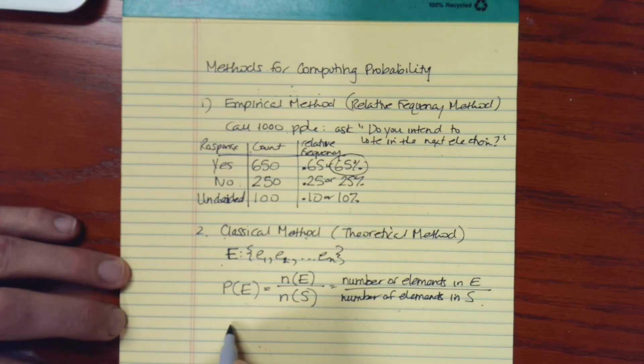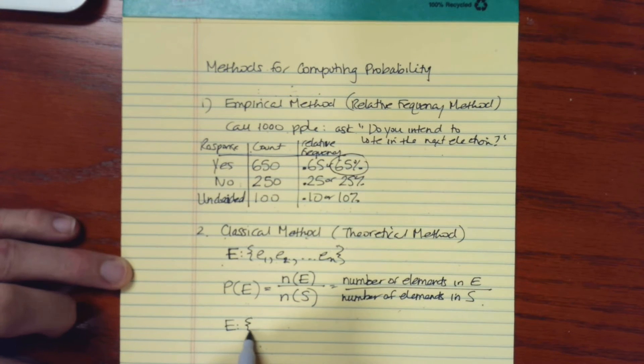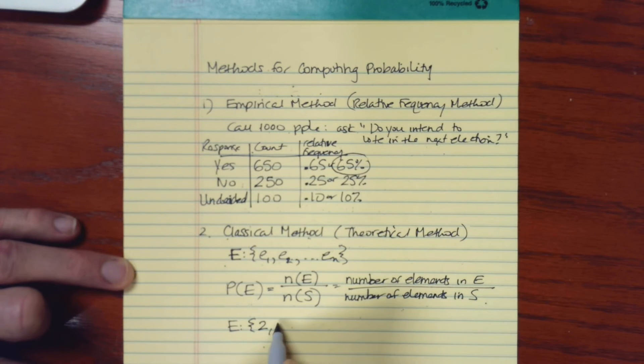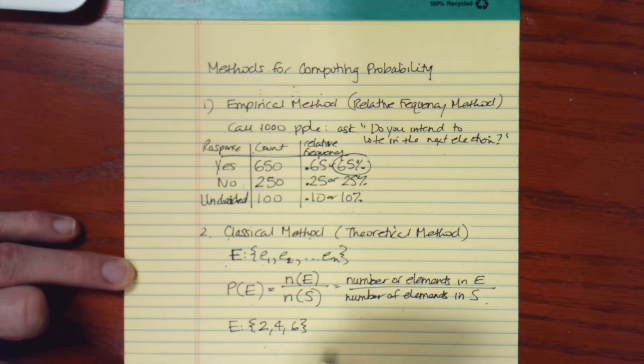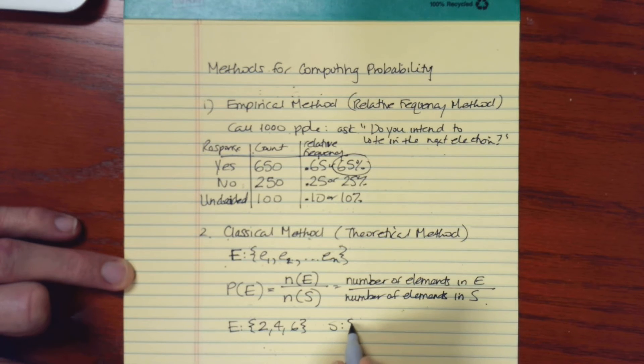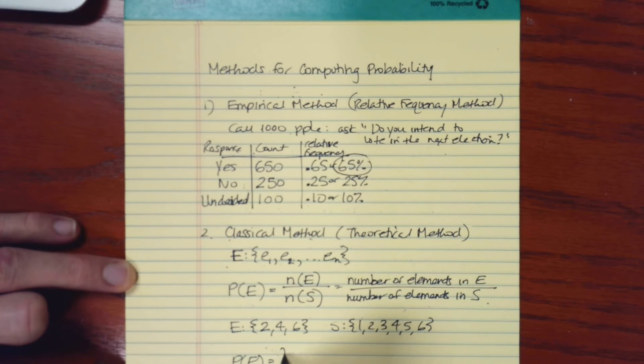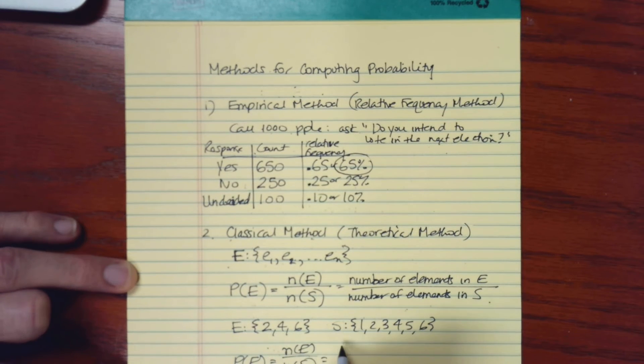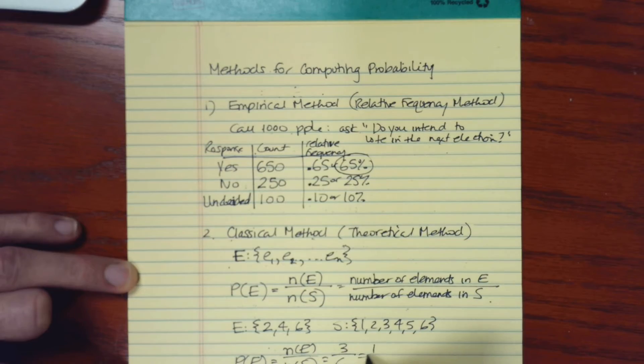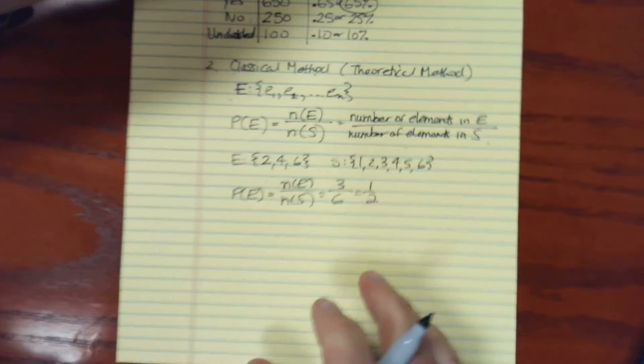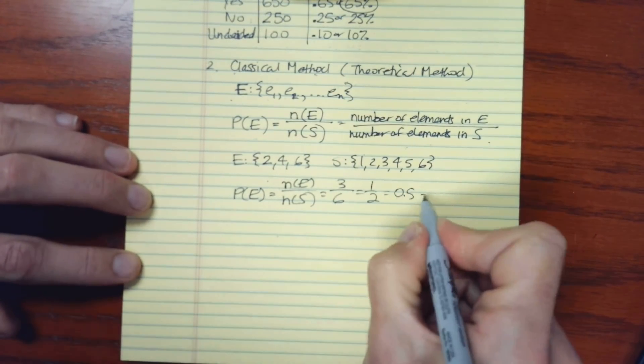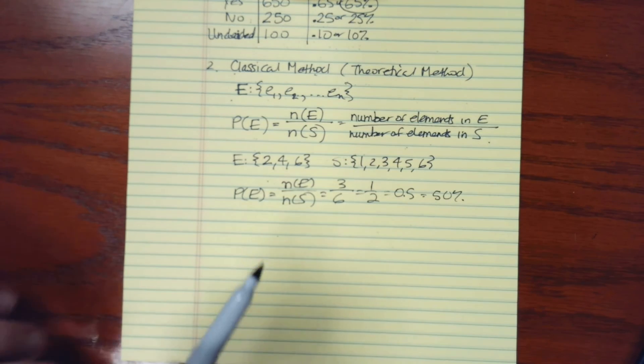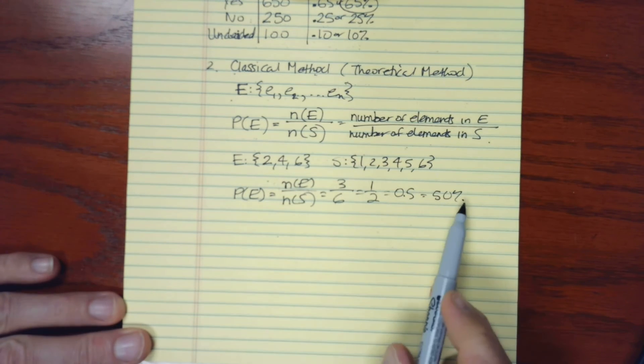For instance, let's say that I define an event to be the outcomes 2, 4, and 6, and this is with the experiment of rolling a die, where my sample space is 1, 2, 3, 4, 5, and 6. The probability for E is the number of things in E over the number of things in S. In other words, this would be 1, 2, 3 over 6, and we can reduce that to a half, or you can convert this to a decimal or a percentage.